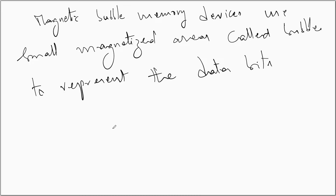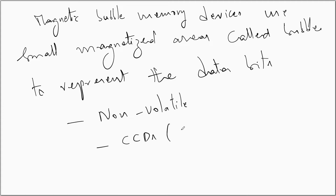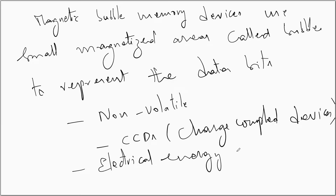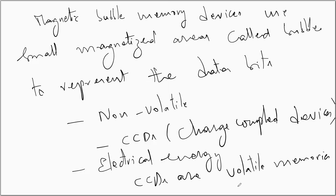These bubble memory devices are non-volatile, unlike the CCDs — that is, the charge coupled devices. The bubble memory devices do not need electrical energy to continue in the same state, whereas the CCDs, which are volatile, need an electrical supply or a battery.